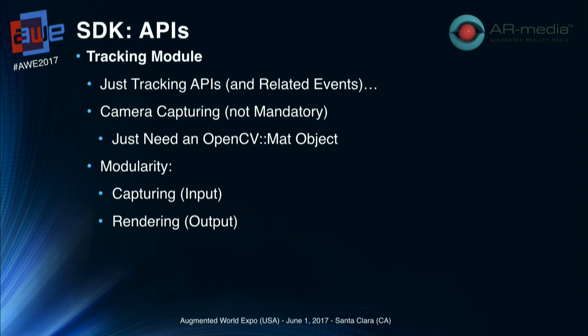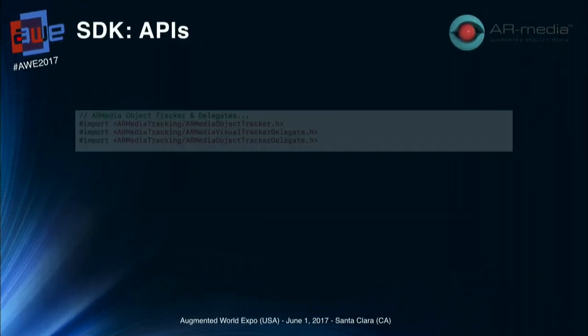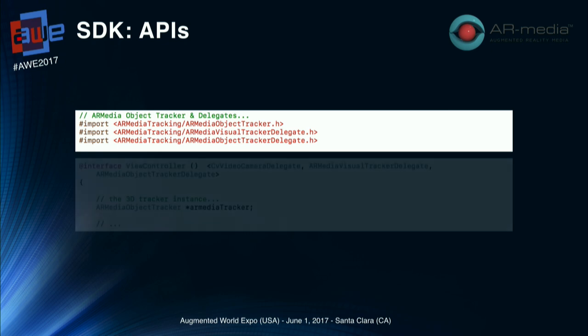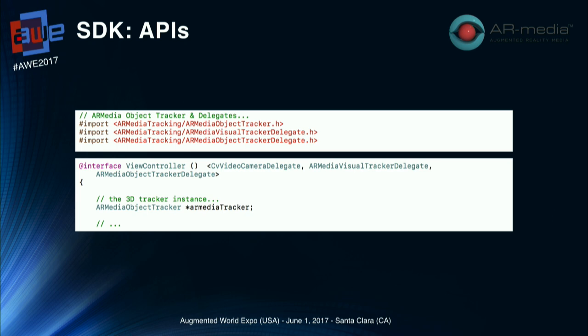Talking about the tracking module, we provide simple tracking APIs and also some APIs to manage tracking events, like the fact that the object was found or lost. We also have a module for managing camera capturing, but it is not mandatory as long as you convert the frame from the camera into an OpenCV Mat object. The tracking module is designed with modularity in mind, so you can change both the capturing engine and the rendering engine.